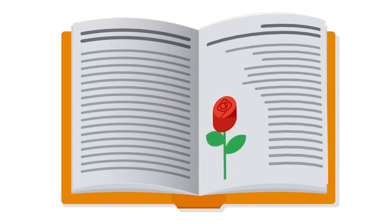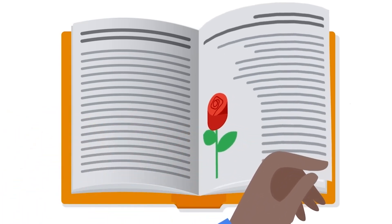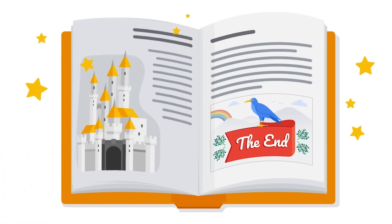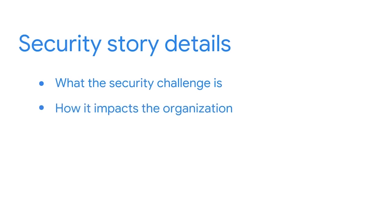Creating security communications to share with stakeholders is similar to telling a great story. Stories typically have a beginning, middle, and end. Somewhere in that story, there is some sort of conflict and an eventual resolution. This concept is also true when telling security stories to stakeholders. The security story details what the security challenge is, how it impacts the organization, and possible solutions to the issue. The security story also includes data related to the challenge, its impact, and proposed solutions.